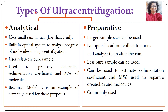Comparing analytical and preparative ultracentrifuge: analytical centrifuge uses a very small sample size of less than 1 ml, while preparative centrifuge can use large sample volumes. Analytical centrifuge is built on an optical system to analyze the progress of molecules during centrifugation, uses relatively pure samples, and is used to precisely determine the sedimentation coefficient and molecular weight. Preparative centrifuge uses less pure samples, can estimate sedimentation coefficient and molecular weight, and is used to separate organelles and molecules. An example of analytical centrifuge is the Beckman Model E.